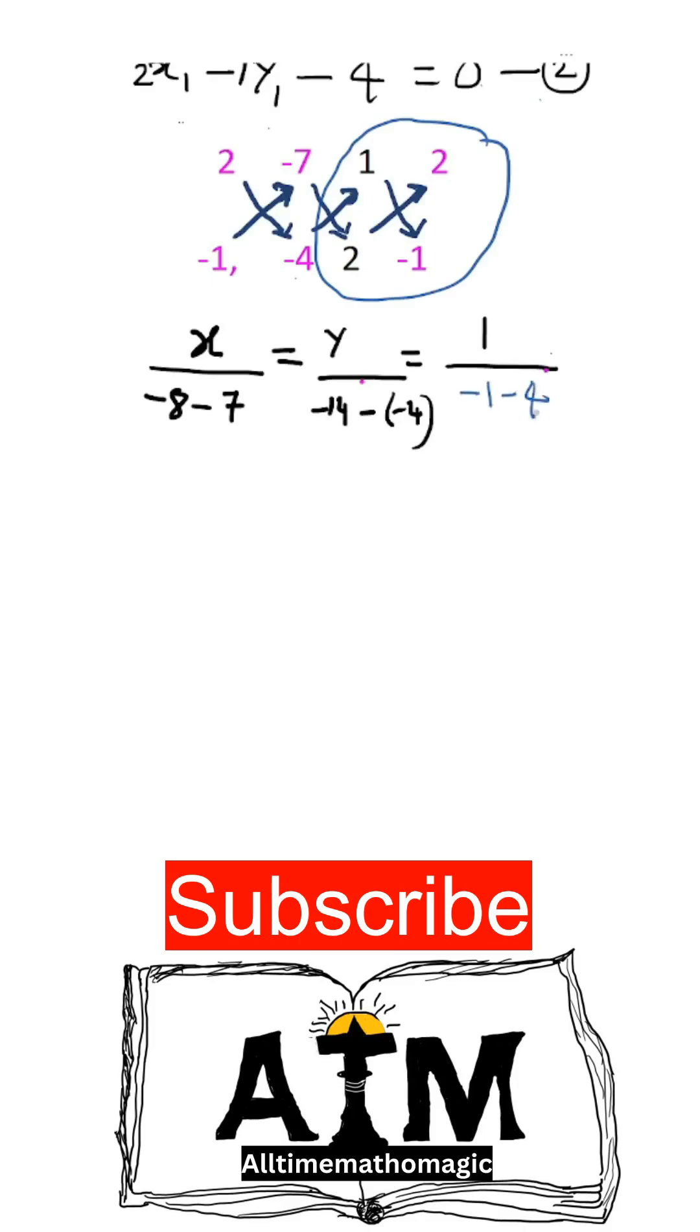Then we get X upon -15 equals Y upon -10 equals 1 upon -5.